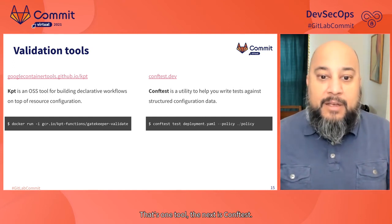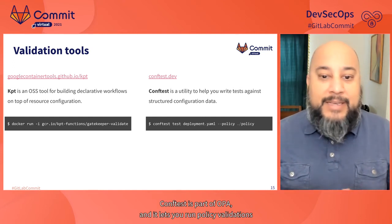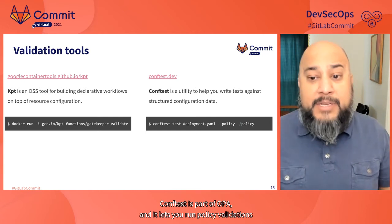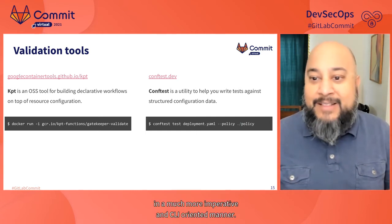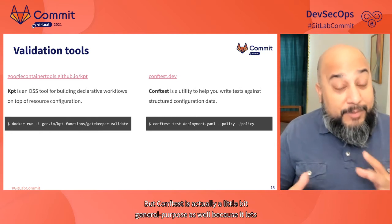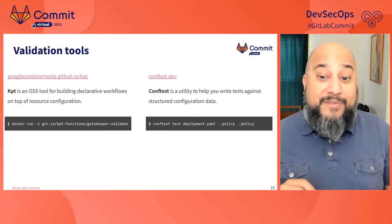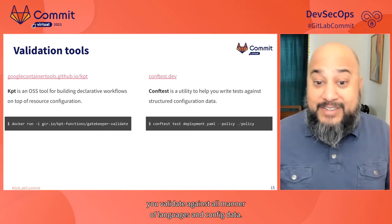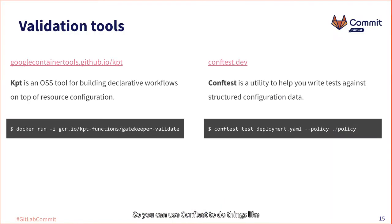The next tool is ConfTest. ConfTest is part of OPA, and it lets you run policy validations in a much more imperative and CLI-oriented manner. ConfTest is also a little bit general purpose because it lets you validate against all manner of languages and config data. You can use ConfTest to do things like validate Terraform or Dockerfiles and other types of files as well.